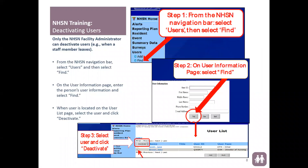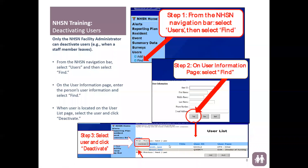That's all there is for adding users. Now we're going to look at deactivating. You log in the same way reviewed earlier, and instead of going to Add you're going to go to Find. You can enter a first name and last name and hit Find, or just hit Find to show everybody with access to that facility group. Once you find the person, put a check box next to their name, select Deactivate, and it will remove that user from your group.